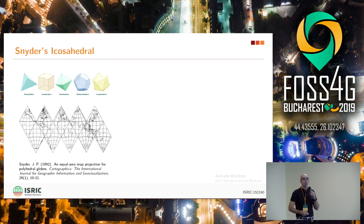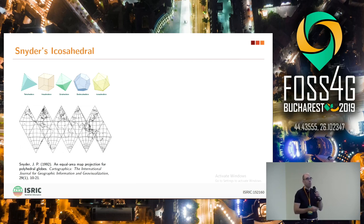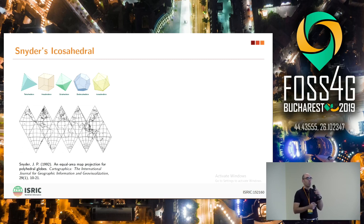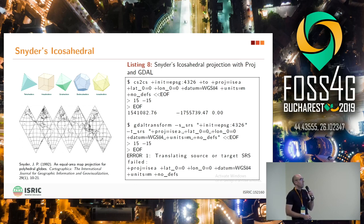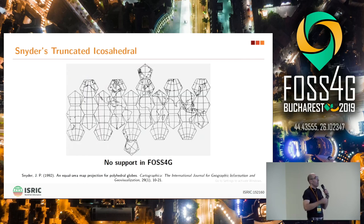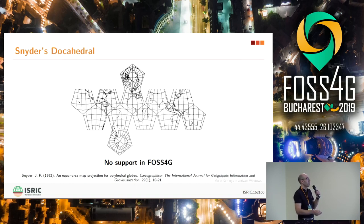Moving on throughout the 20th century to even more sophisticated projections, like those defined by Mr. Snyder — a scholar anyone who studied cartography probably knows — who wrote many books and developed his own projections based on the Platonic solids. Interestingly, the most popular of these, based on the icosahedron, is also supported in PROJ. But again, we have the problem that it cannot be used by GDAL because the inverse is not there. Most of Snyder's projections are not supported and cannot really be used in FOSS4G.